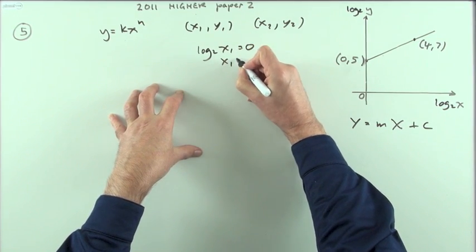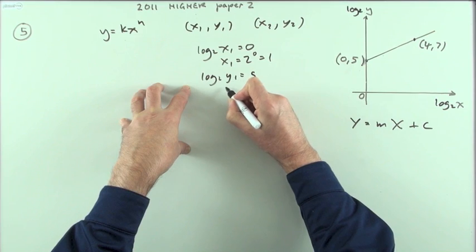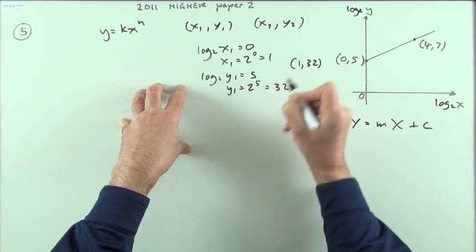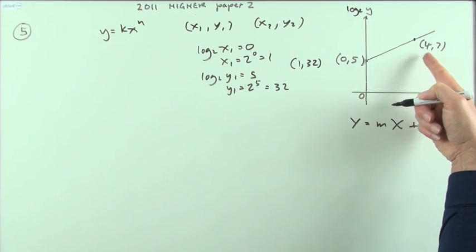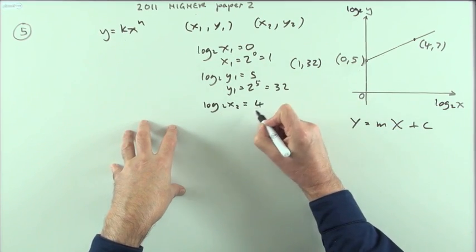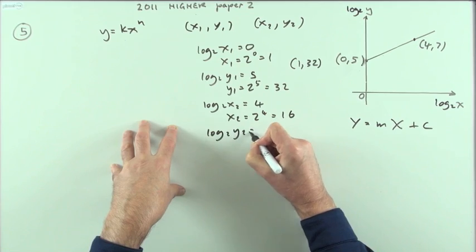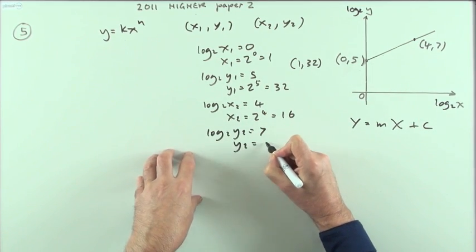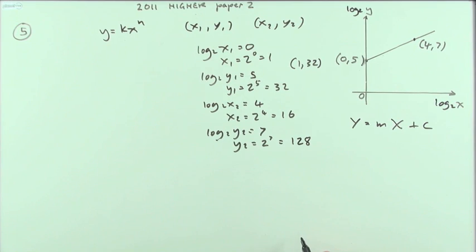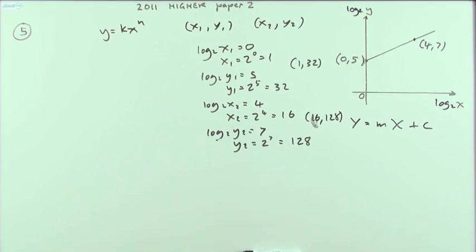I'll say x1 was 0. That means x1 must be 2 to the 0, which is 1. Log 2 of y1 was 5. That means that y1 must have been 2 to the 5, which is 32. So that initial point was the point 1,32. Same for the second point. Those are the logarithms of the x and the y. Log 2 x2 is 4. So x2 is 2 to the power 4, which is 16. Log 2 y2 is 7, which means y2 is going to be 2 to the power 7, which is 128. So that means these two form the point. Oops, what is it? 16, 128. Now that took quite a bit of time to get to these two.